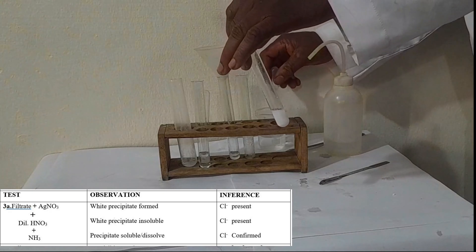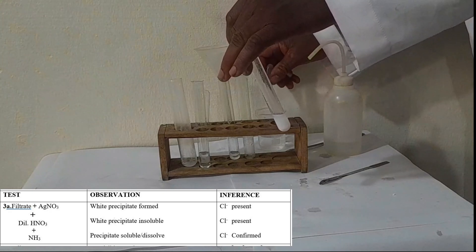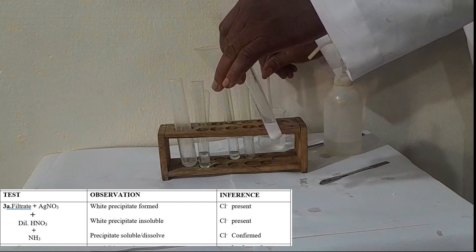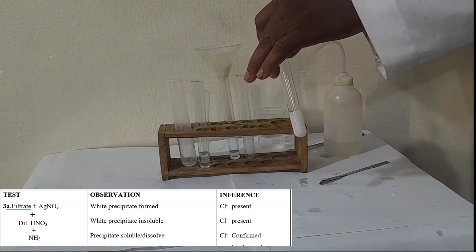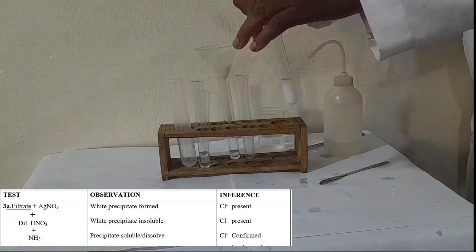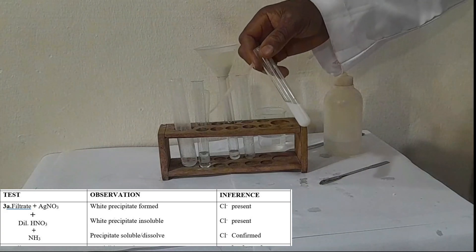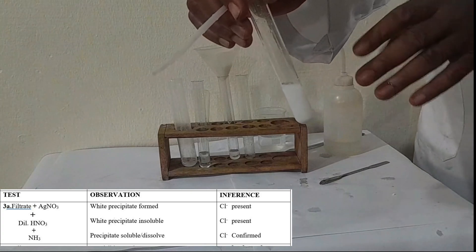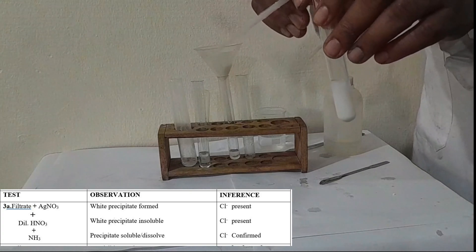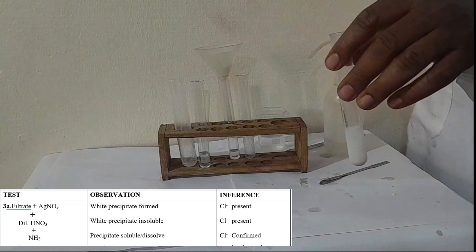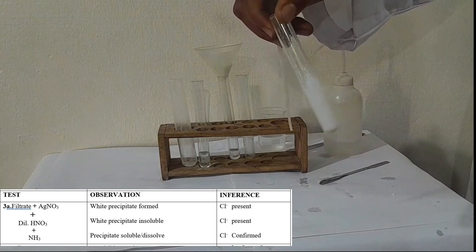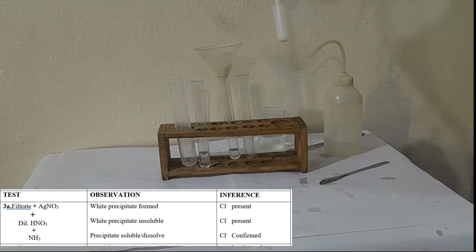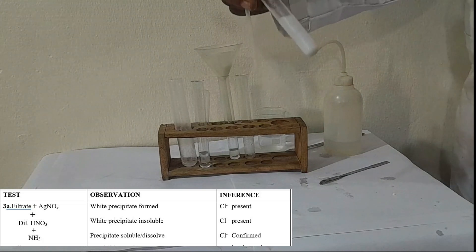On addition of ammonia, what are we expecting? We're expecting the solution to dissolve. Let's add excess ammonia so that we can see the precipitate dissolving. See, it's dissolving. This shows the presence of chloride ion.